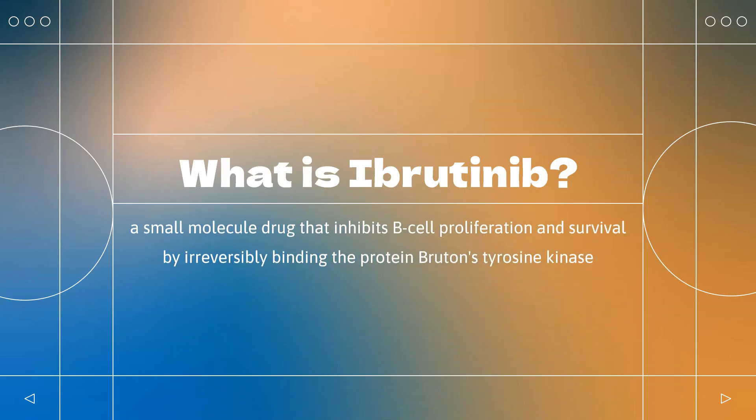Ibrutinib, sold under the brand name Imbruvica among others, is a small molecule drug that inhibits B-cell proliferation and survival by irreversibly binding the protein Bruton's tyrosine kinase. Blocking BTK inhibits the B-cell receptor pathway, which is often aberrantly active in B-cell cancers. It is on the World Health Organization's list of essential medicines.